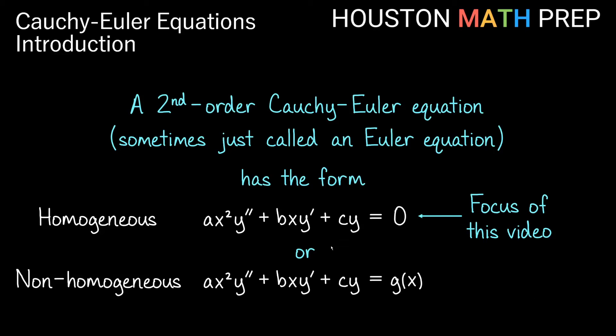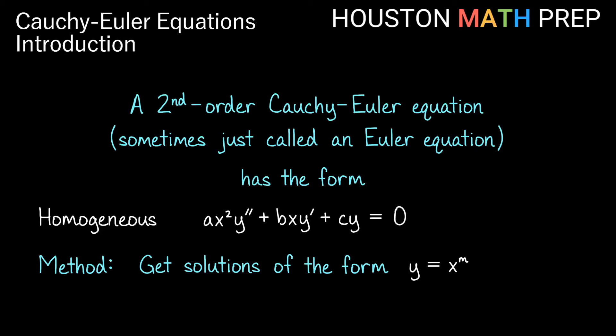Recently, in your study of second-order equations, you've probably solved linear equations that had constant coefficients, and the fundamental solution set involved exponential functions. Here, our method for solving these Euler equations — our fundamental solution set is actually going to involve x to some power, so polynomial functions, instead of exponential functions.